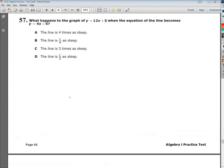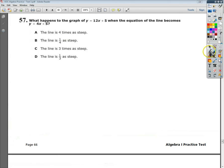It says so on their website where I got this practice test, so you can choose to continue watching just in case it is, or you can just move on as you practice for your EOC. Anyway, the question says, what happens to the graph of y equals 12x plus 5 when the equation of the line becomes y equals 4x plus 5?